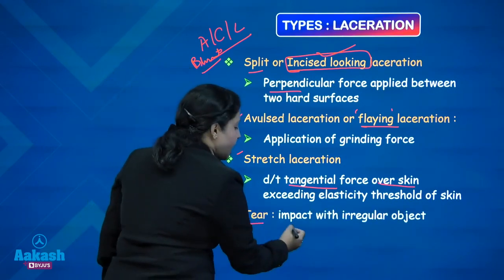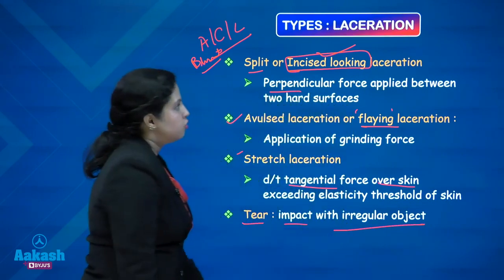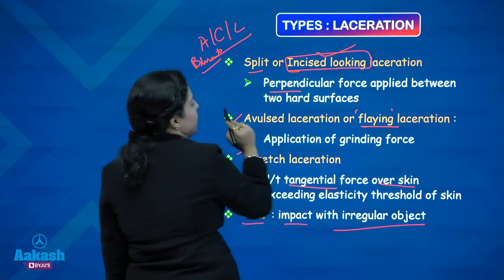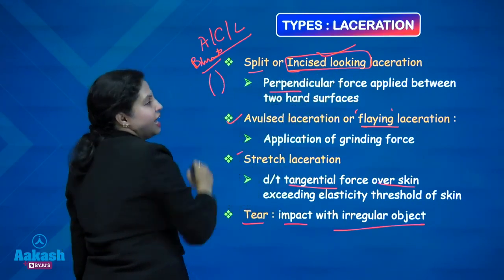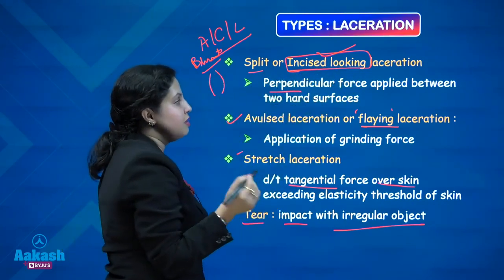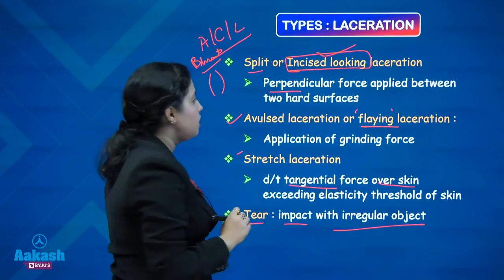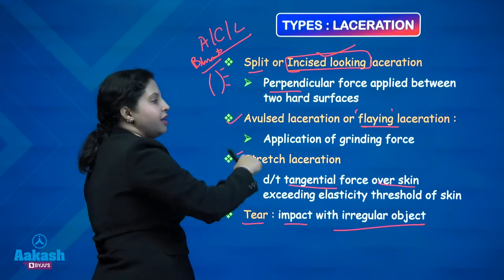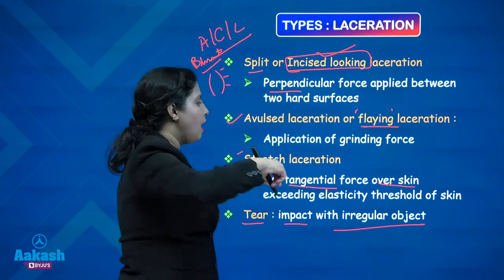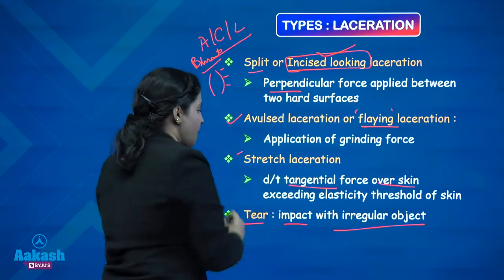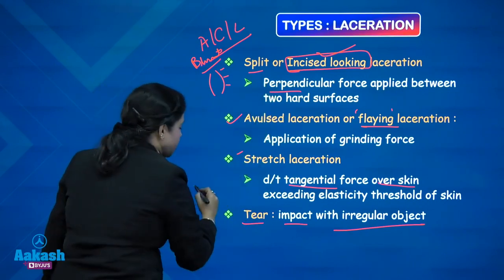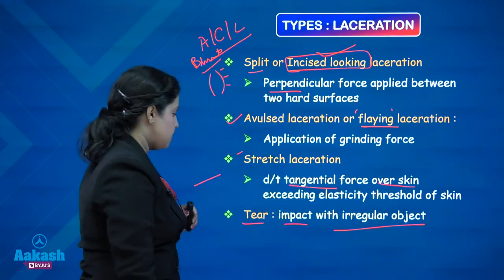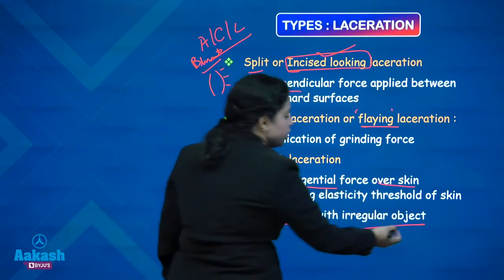Finally, a tear — it is impact with an irregular object. So these are the four types of laceration: split or incised looking, where the margins and edges may look as if caused by a sharp weapon but it is not; evulsed or flaying because of a grinding force; stretch laceration where the elasticity of the skin is tested by a tangential force; and tear from impact with an irregular object.